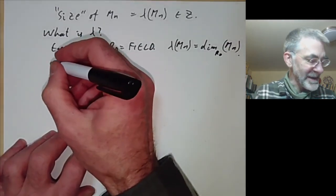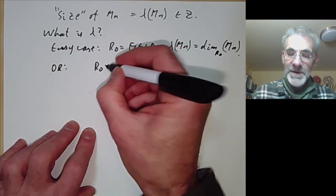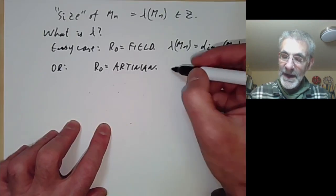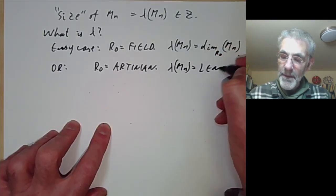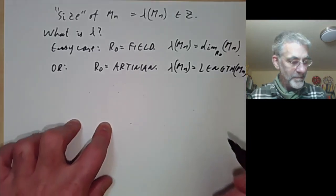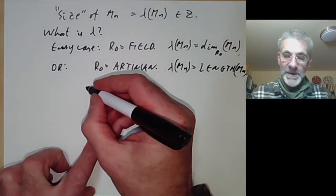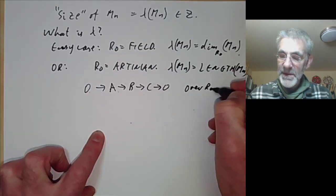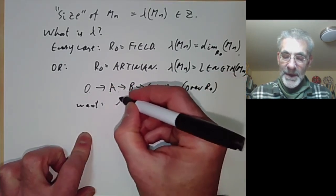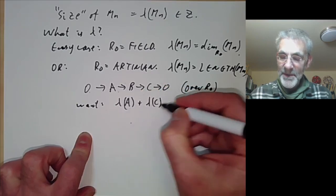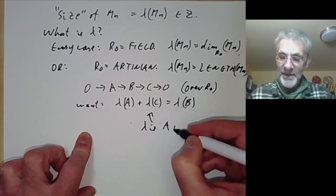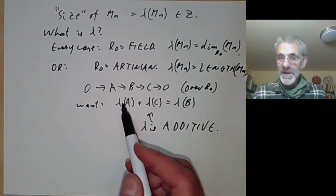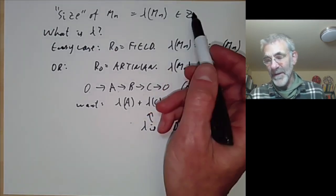A slightly more complicated case: let's take R_0 to be an Artinian ring. Over Artinian rings all finitely generated modules have finite lengths, so we can put λ(M_n) to be the length of M_n. λ needs to have the following basic property: if we've got a short exact sequence of modules 0 → A → B → C → 0 over R_0, then we want λ(A) + λ(C) = λ(B). So this says λ is additive on short exact sequences, and this is basically the only property of λ we need, apart from the fact that λ should be integer valued.